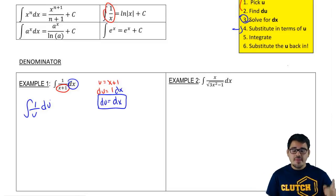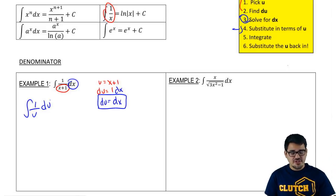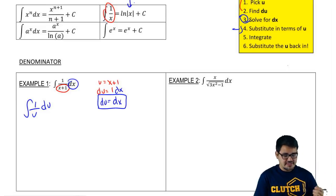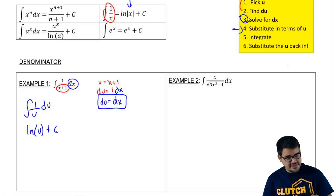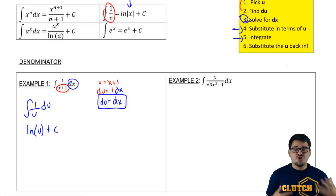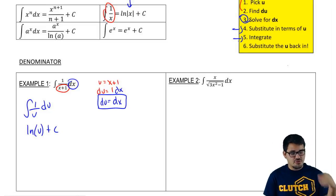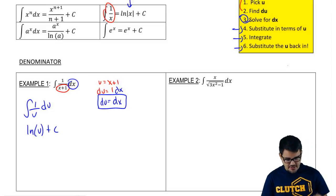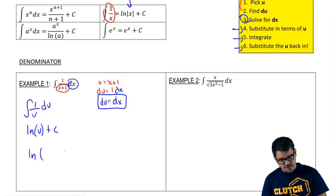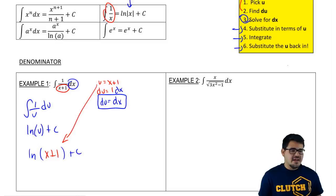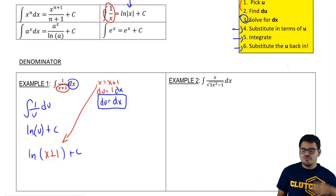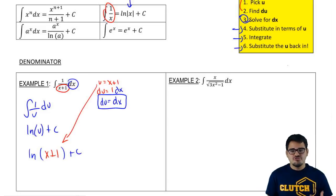We look at our rules and remember that whenever we have 1 over x or 1 over any variable, the integration turns into ln of x plus c. So that's exactly what we do here — we get ln of u plus c. Then we substitute u back in: ln of (x+1) plus c. These types of problems are very common. Whenever you have a denominator problem, expect to use ln — it's going to be very likely that you'll be using ln.